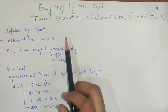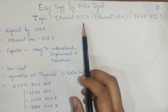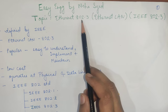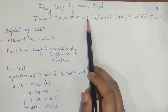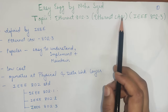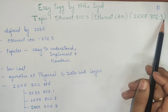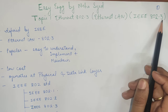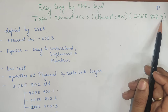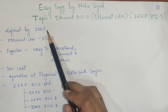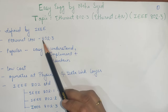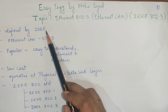Hello friends, welcome back. In this lecture, we are going to see Ethernet 802.3. It is also called as Ethernet LAN or IEEE 802.3. It is called 802.3 because the IEEE standard has given the name 802 to the Ethernet LAN, and it has been defined by the IEEE standard.